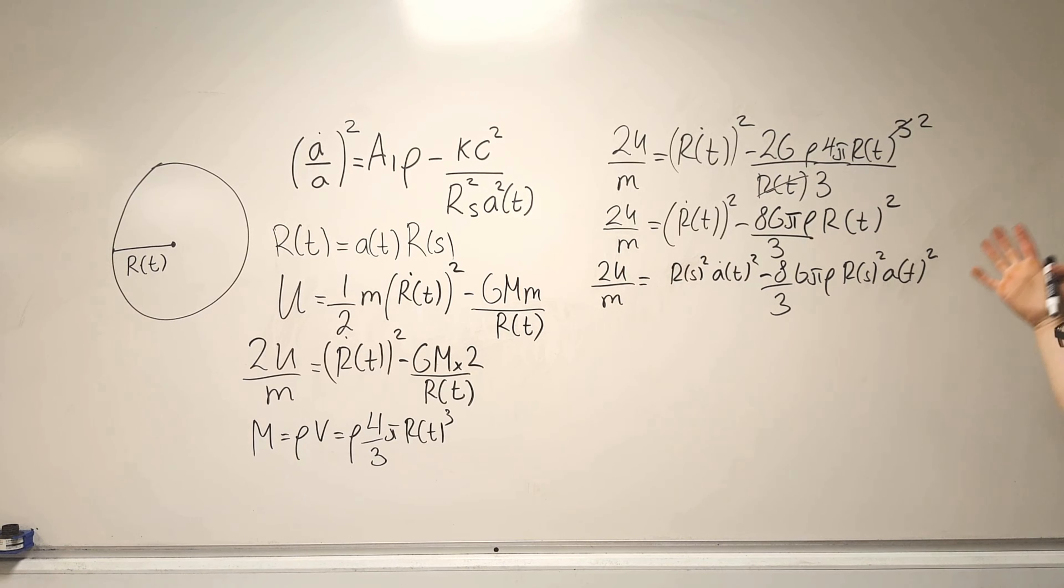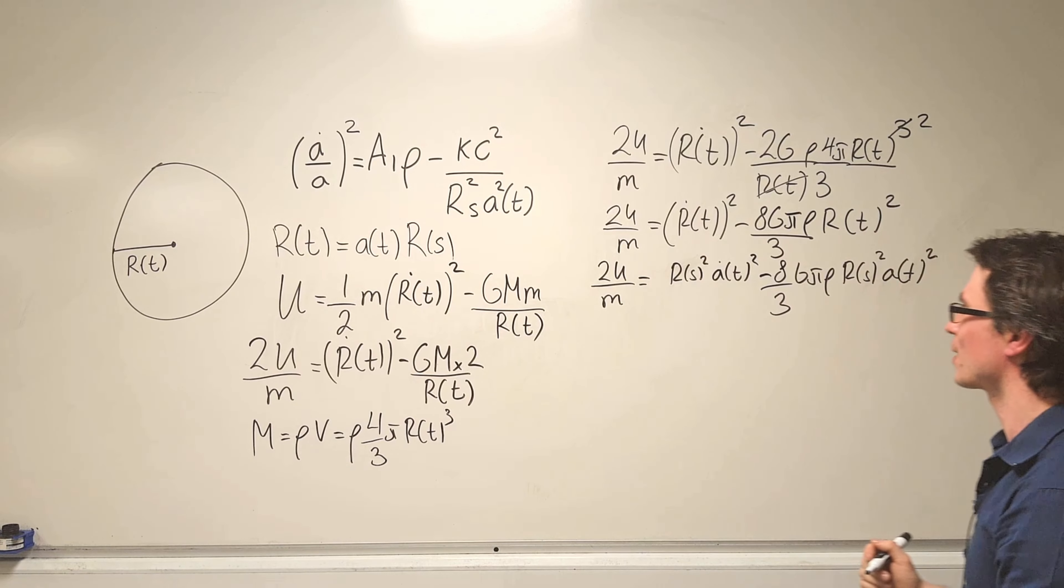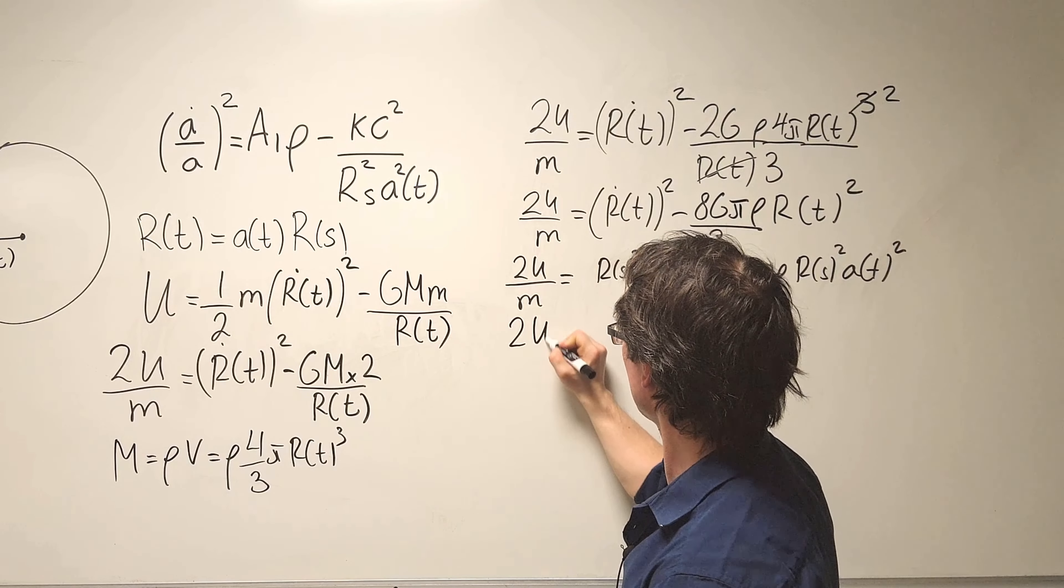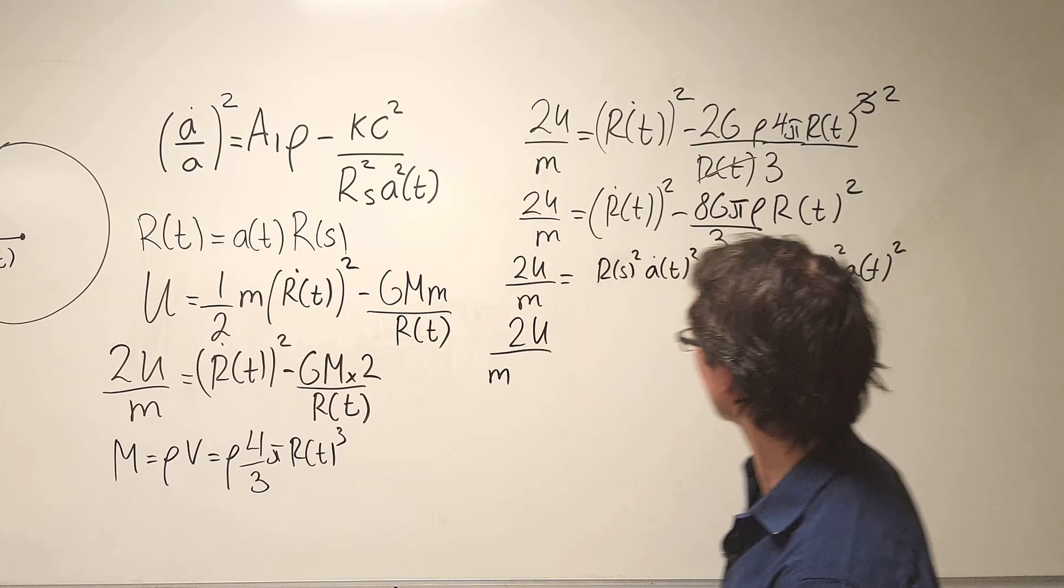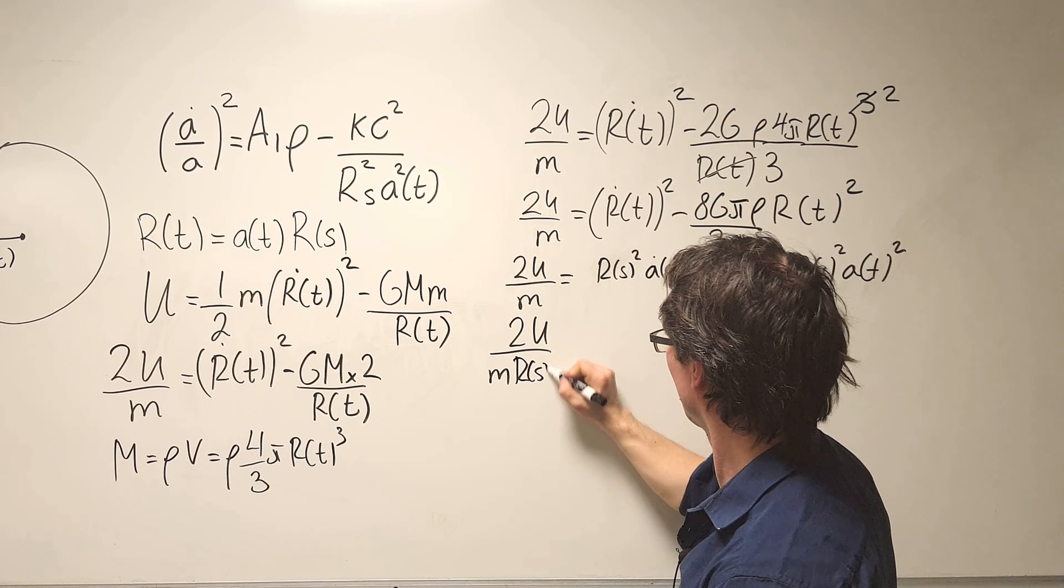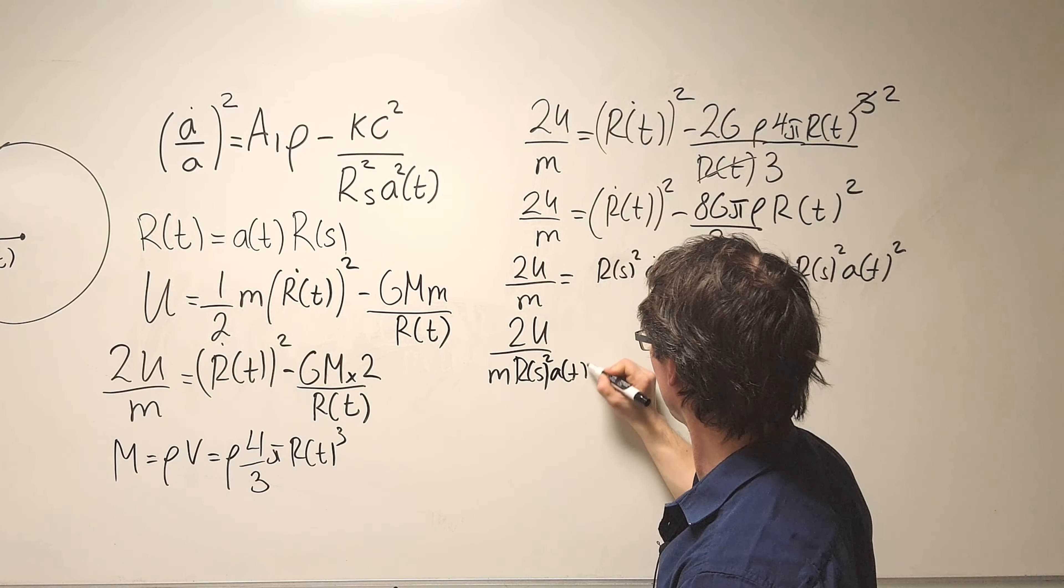Now what I'm going to do is divide by R(s) squared and A(t) squared both sides in order to get this equation for the expansion of the universe. So a bit of algebra, we're going to get 2U over m divided by R(s) squared.